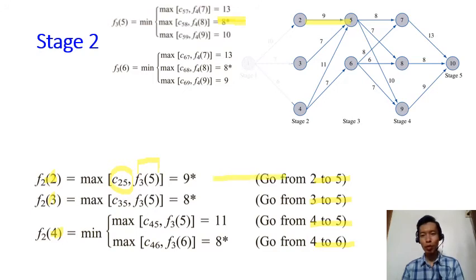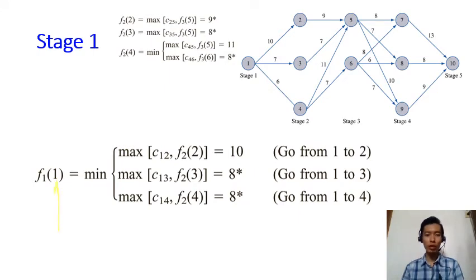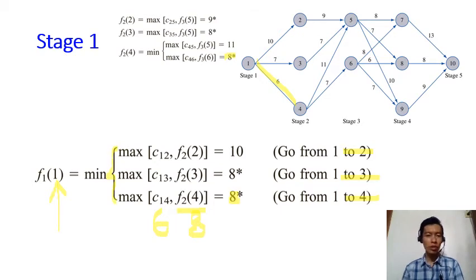If there is only one possible decision, there is no curly bracket. If you have two possible decisions, you use curly brackets and take the minimum between them. Finally, at stage 1 we know for sure we start at city 1. We have three possible options: going to city 2, 3, or 4. For example, going from 1 to 4, the altitude c(1,4) = 6, and f2(4) has value 8 with an asterisk; the maximum of 6 and 8 is 8. Taking the minimum among all possible decisions, there are two optimal decisions: going from city 1 to city 3, or from city 1 to city 4.